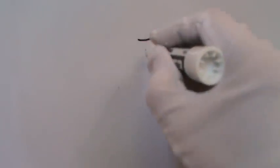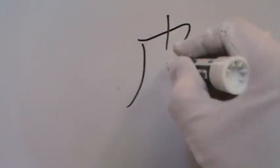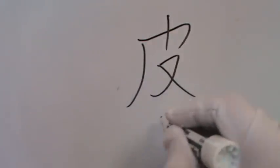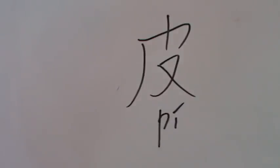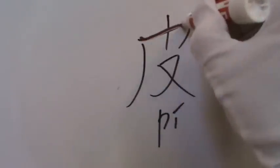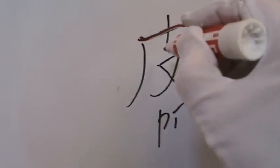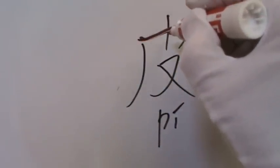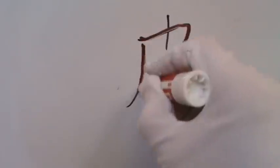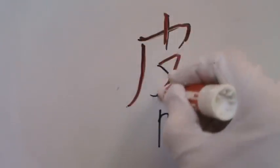Number six: 皮 (Pi), written with 5 strokes. Pi means skin or leather, but is also used in the name Peter. The character itself is also the radical.